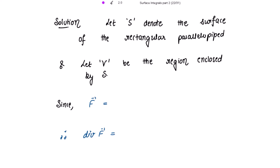F-vector is given as (x² - yz)i + (y² - zx)j + (z² - xy)k. To use the Gauss's Divergence Theorem, we first find the divergence of F.